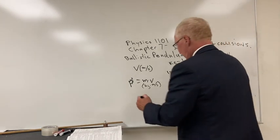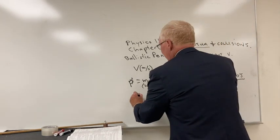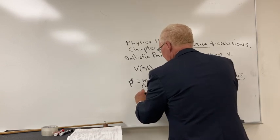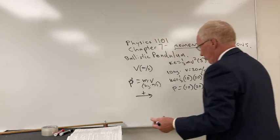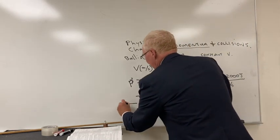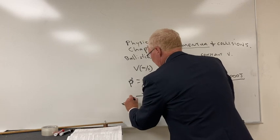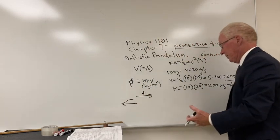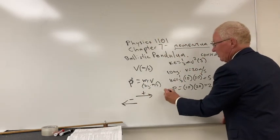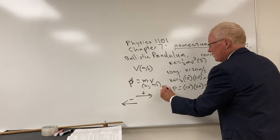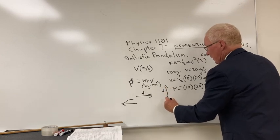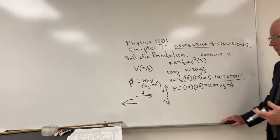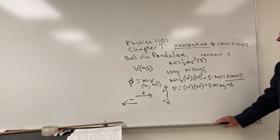Direction makes a difference. If we're going plus 20 meters per second, momentum points that direction. If we're going minus 20 meters per second, it would be in the opposite direction — much like up and down: if it's up it's positive, if it's down it's negative.